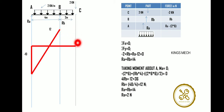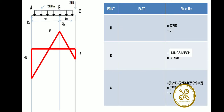This is how the SFD diagram flows. We mark all the values and create the SFD. The value at B is marked accordingly.